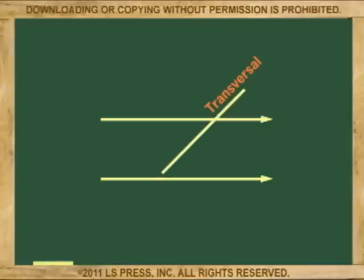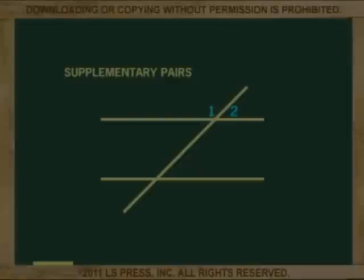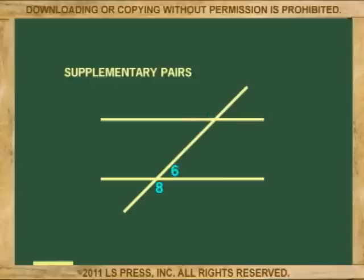We can say with confidence: if two parallel lines are cut by a transversal, then pairs of corresponding angles are equal. Now, moving to supplementary pairs of angles — pairs that add up to 180 degrees. Remember that all linear pairs of angles are supplementary.